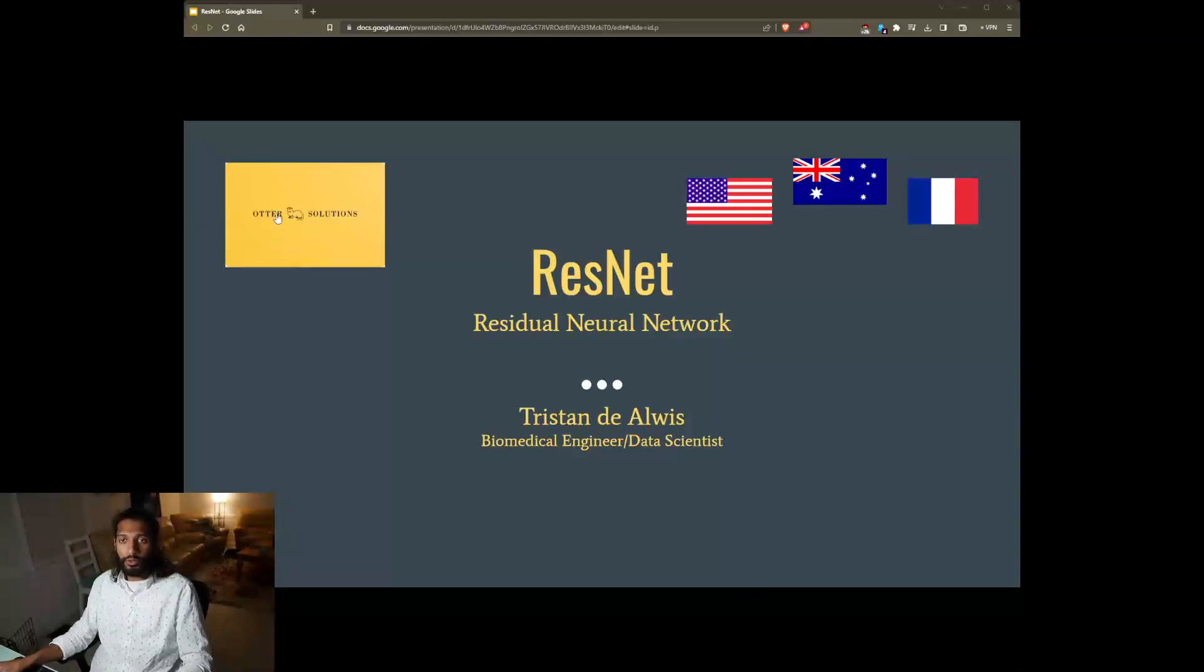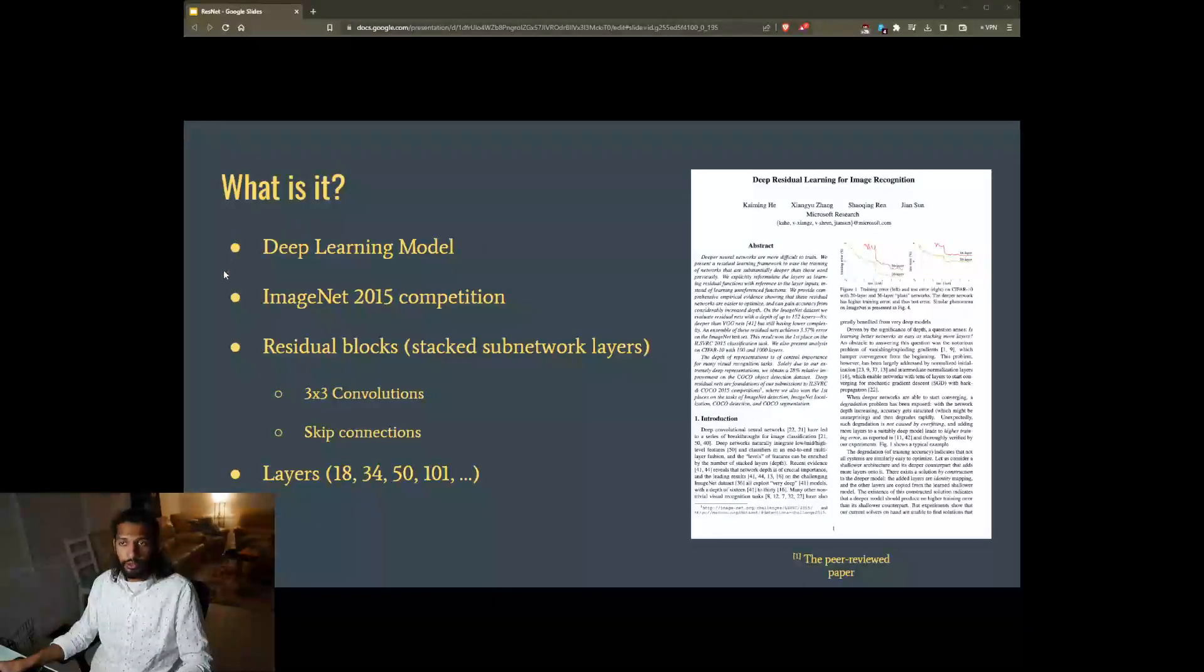ResNet, short for Residual Neural Network, is a deep learning architecture that was introduced to address the challenge of training very deep neural networks. It was proposed by Kai Minghe, Xingyu Zhang, Xiao Qingren, and Jian Sun in their 2015 paper, Deep Residual Learning for Image Recognition.